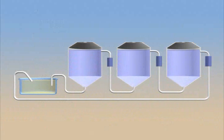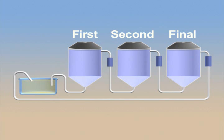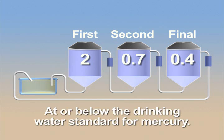Throughout the test, the mercury concentrations after the first, second, and final stage of CSTR treatment averaged 2, 0.7, and 0.4 parts per billion respectively, at or below the drinking water standard for mercury of 2 parts per billion.